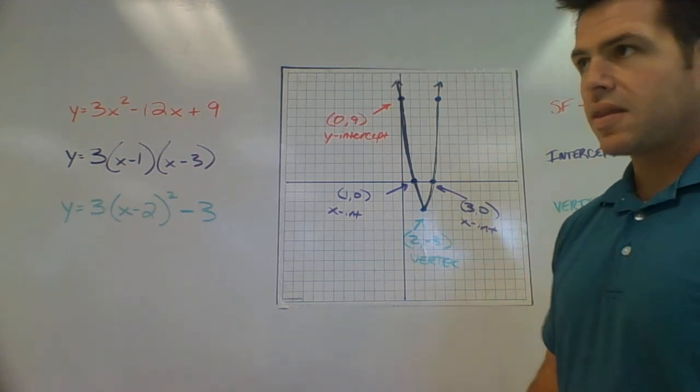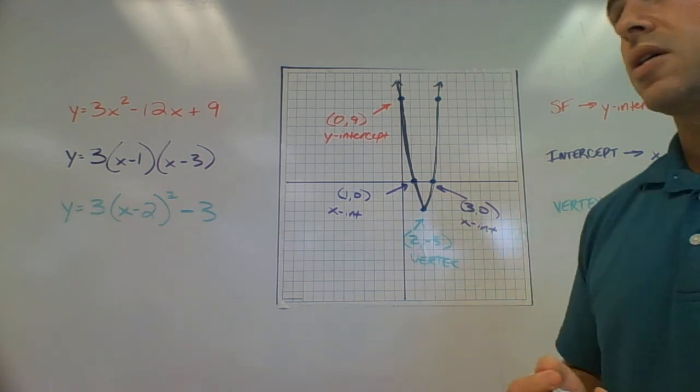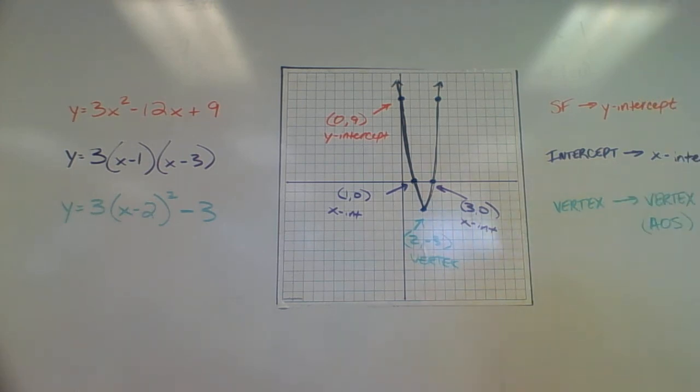Now we understand that with getting the vertex, we're also given the axis of symmetry. We actually find the axis of symmetry first from that. So hopefully with this being out like this,